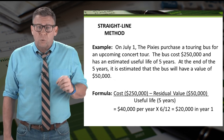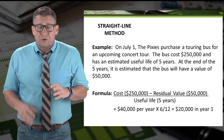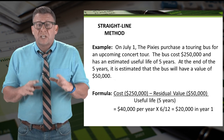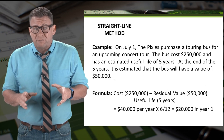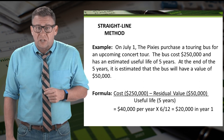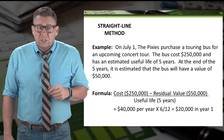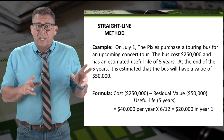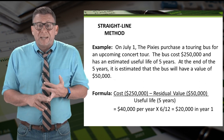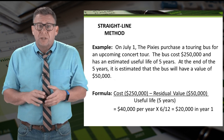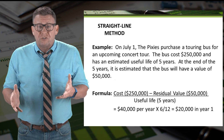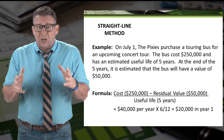On July 1, the Pixies purchased a touring bus for an upcoming concert tour. The bus cost $250,000 and has an estimated useful life of five years. At the end of the five years, it's estimated the bus will have a value of $50,000. Using the same straight-line formula, we take the cost of $250,000 minus the residual value of $50,000, that equals $200,000, then divide by five years, and we get the annual depreciation expense of $40,000 per year.